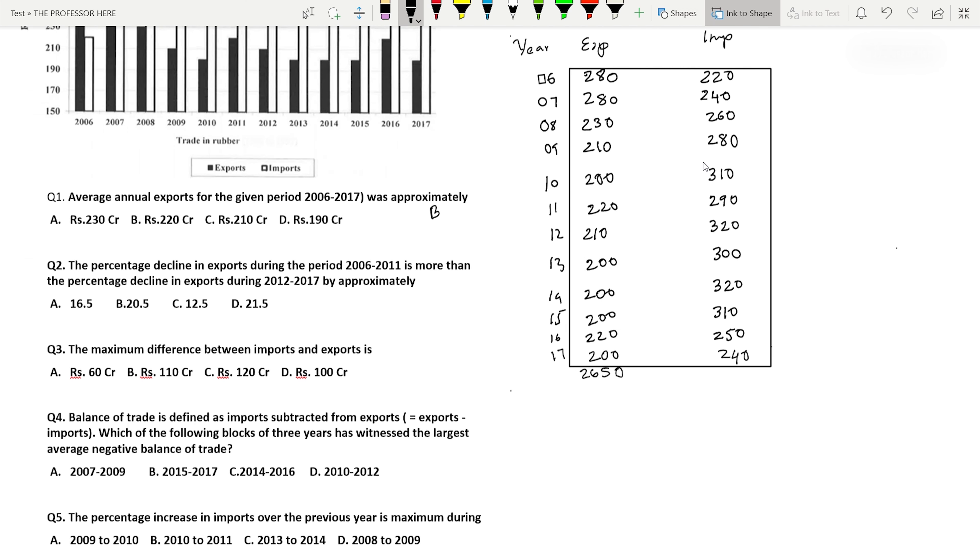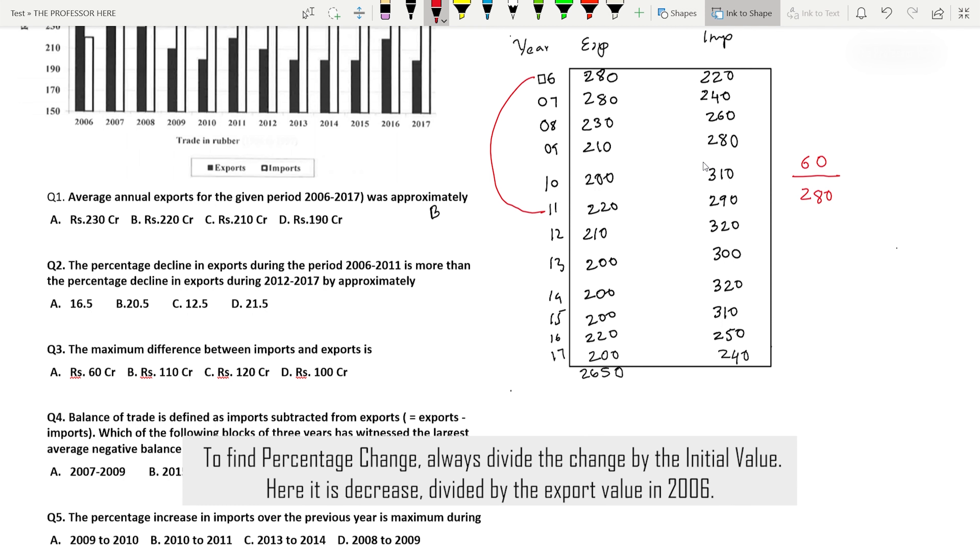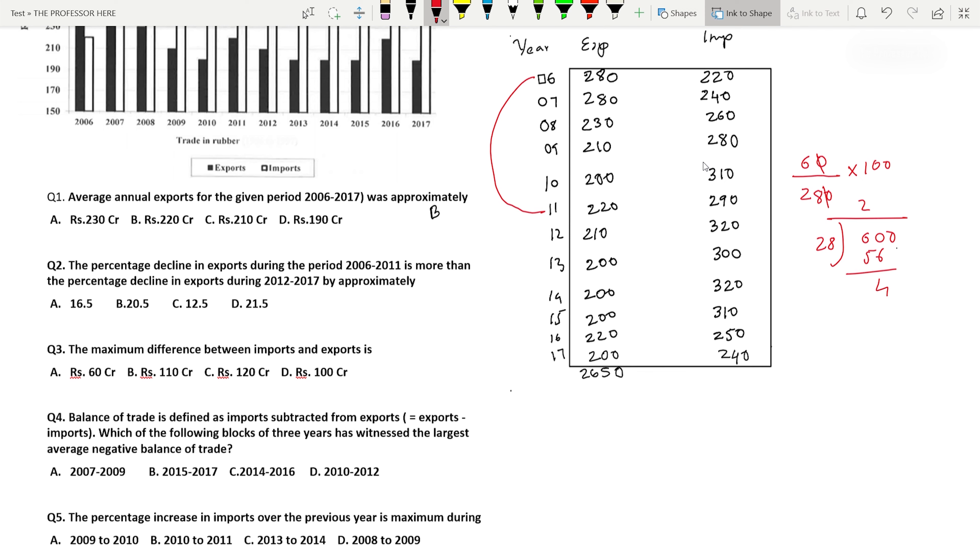Question number two: The percentage decline in exports during the period 2006 to 2011 is more than the percentage decline in exports during 2012 to 2017 by approximately. Let's first find the percentage decline in exports during 2006 to 2011. In 2006 the exports was 280 and in 2011 it is 220, so there's a decline of 280 minus 220 = 60 divided by 280 into 100. So we get 600 divided by 28, which equals 21.4 percent.